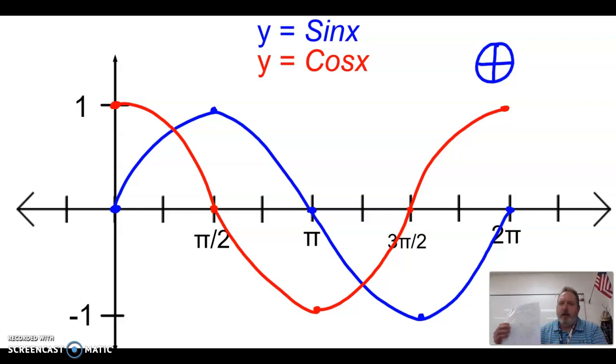So if you take your unit circle, and you really can't see mine or read it, but if you start at 0, sine of x, your y value, is also 0. And if you go to π/2, sine of x is 1. At π, sine is back to 0. At 3π/2, sine is negative 1. And at 2π, it's back to 0.